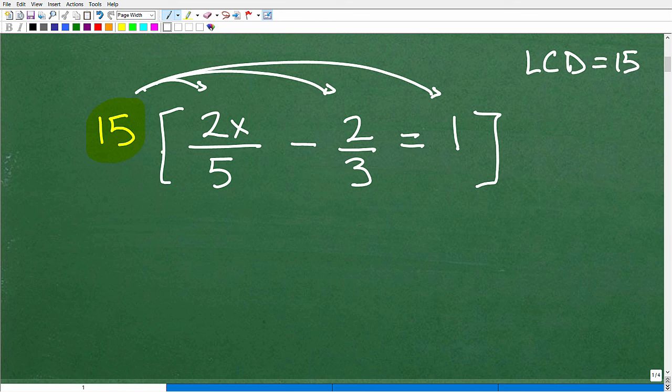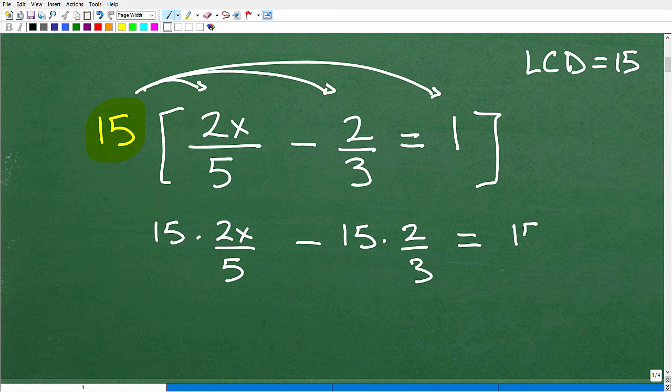Okay? All right. Now, when I do that, let's see here. Here, 15 times 2x over 5, all right, minus 15 times 2 thirds, all right, equals 15 times 1. Okay.